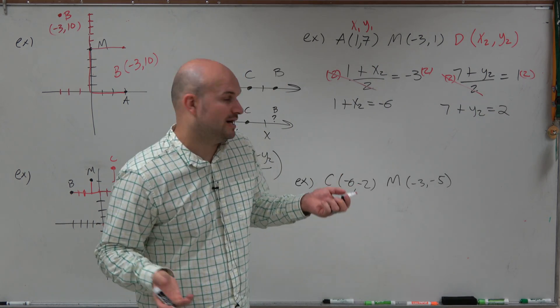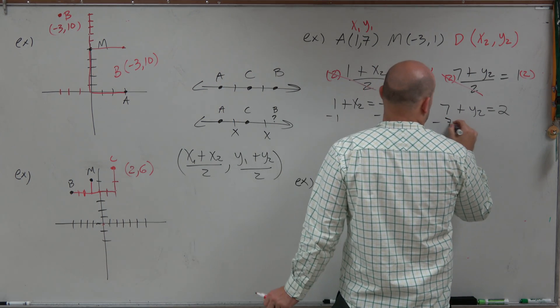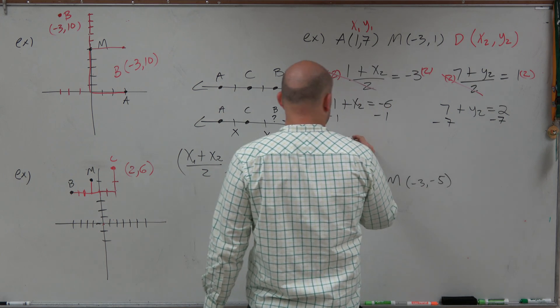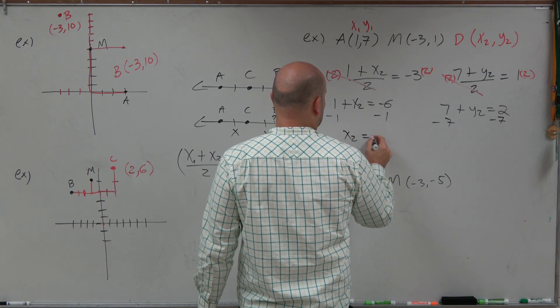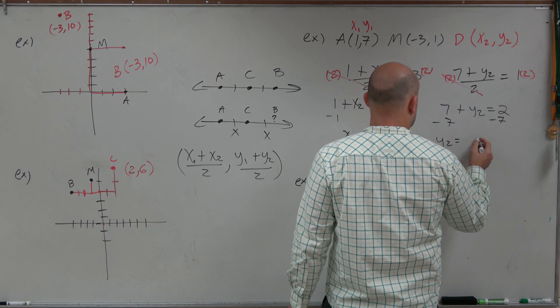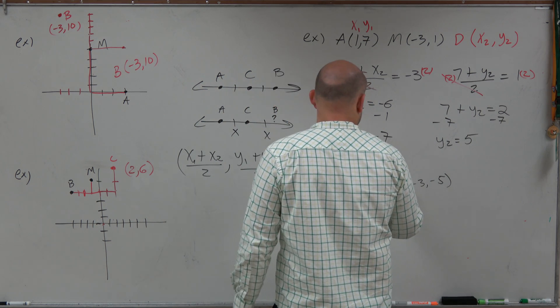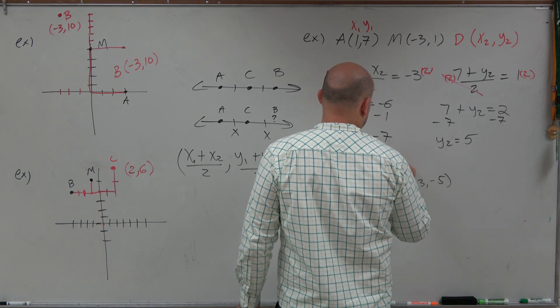Now, I just go ahead and isolate my x2 and my y2. So I'll subtract 1 on both sides, subtract 7 on both sides. And therefore, I have x2 equals negative 7. And here I have y2 equals negative 5. So therefore, my other endpoint is going to be negative 7 comma negative 5.